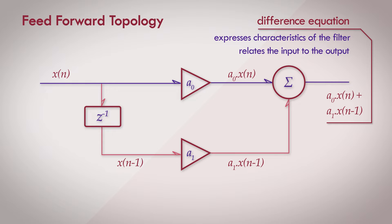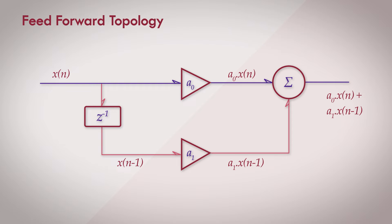The order of the structure is related to the number of delay elements in a signal path. There is a single one sample delay in the structure and hence it's a first order filter. And you can tell why the structure is called feed forward. The input branches out, feeds into the sum and the signal flows from the input to the output.